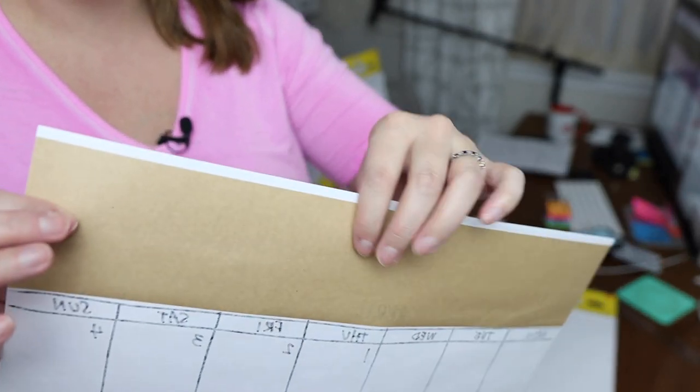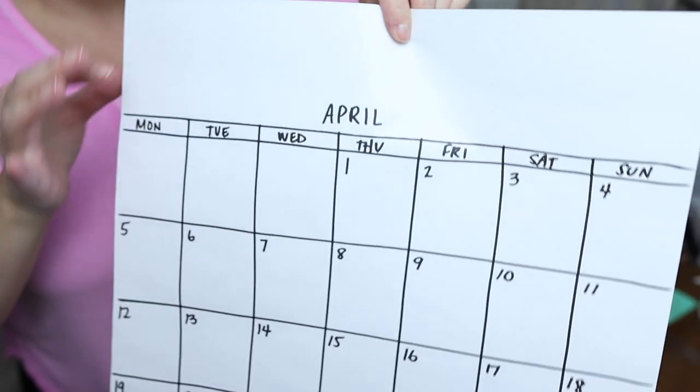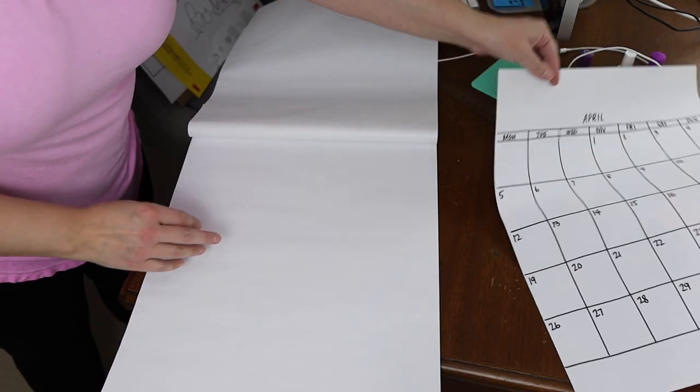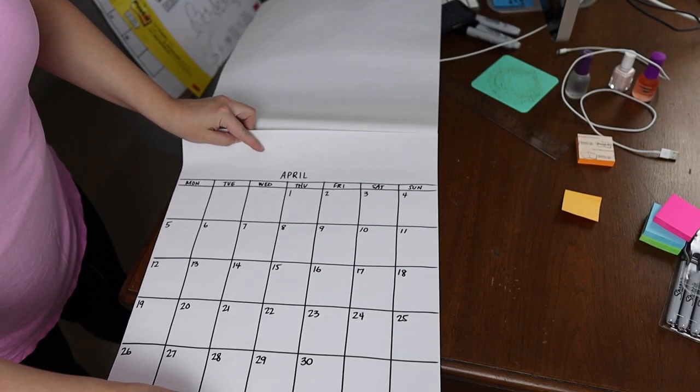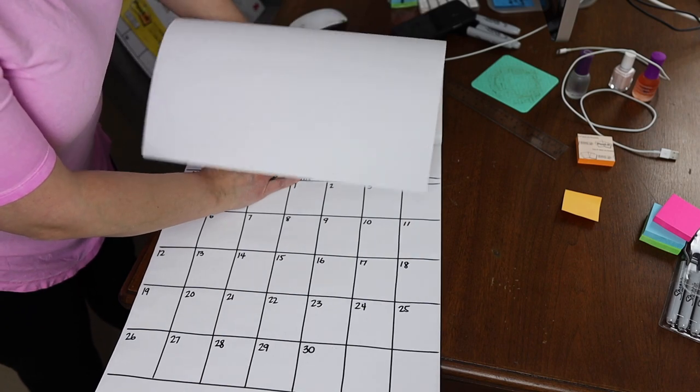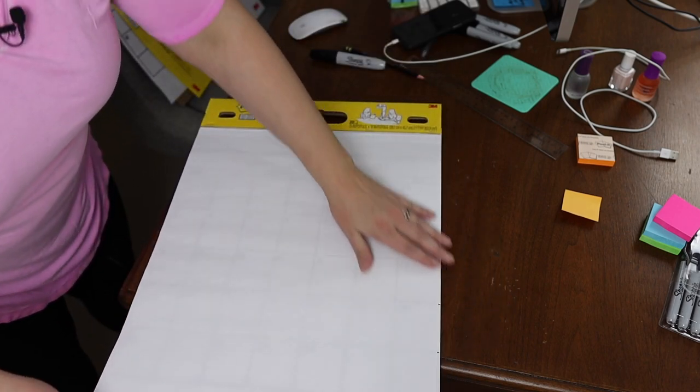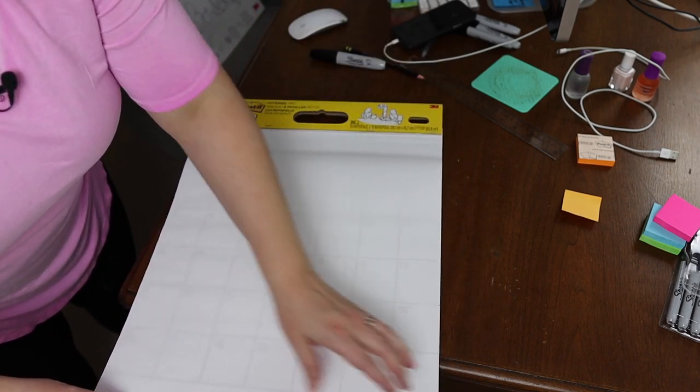So use the last page of the Post-it note pad as your template. So I'm going to use my April one here from now on, that way I'm not sticking and resticking the December template on all of these different months as I go through.